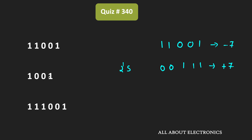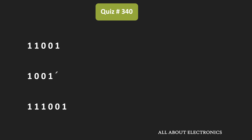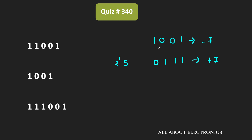Similarly, if we talk about the second number, its MSB is equal to 1, which means once again this number is negative. So let us find its 2's complement. The 2's complement of 1001 is equal to 0111, which once again corresponds to +7. This indicates that the given number is a representation of -7 in 2's complement form. In this case, the number is represented in a 4-bit form.